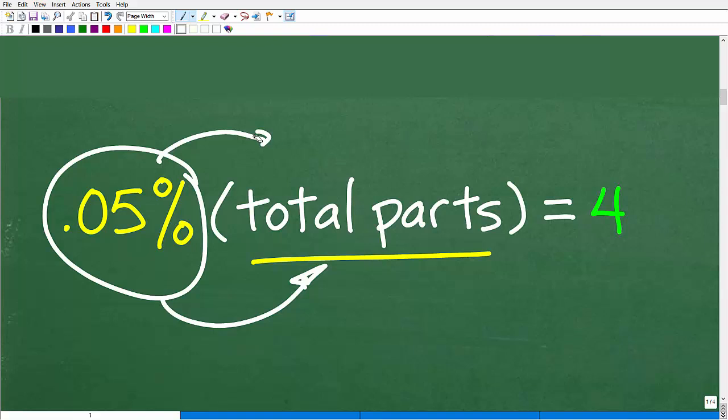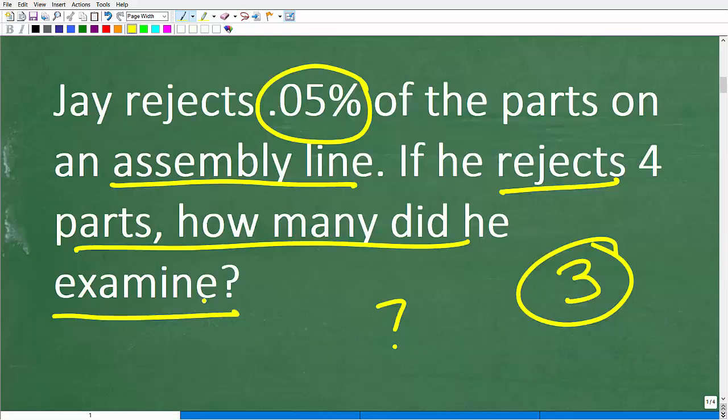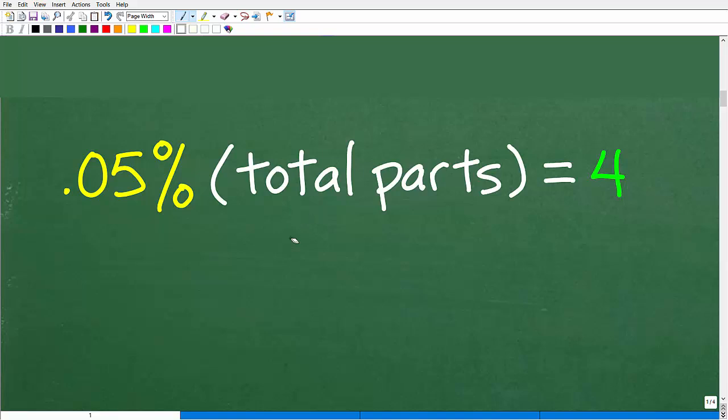We need to set up some sort of equation here to solve this problem. If this part is confusing to you, go back and read the question again. We can see here, if Jay rejects 0.05% of the parts on the assembly line, if he rejects four parts, he rejects four out of the total, we're looking for the total number he examined. We need some sort of mathematical statement that effectively relates the problem. So 0.05% of the total parts is equal to four. What we're looking for here is how do we get this number, the total parts?